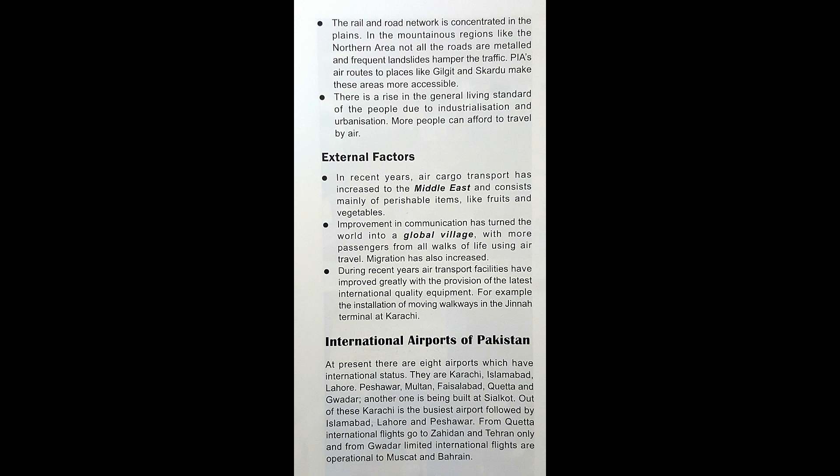Regarding international airports of Pakistan: at present, there are eight airports which have international status. They are Karachi, Islamabad, Lahore, Peshawar, Multan, Faisalabad, Quetta and Gawadar. Another one is being built at Sialkot. Out of these, Karachi is the busiest airport, followed by Islamabad, Lahore and Peshawar. From Quetta, international flights go to Zahedan and Tehran only. From Gawadar, limited international flights are operational to Muscat and Bahrain.